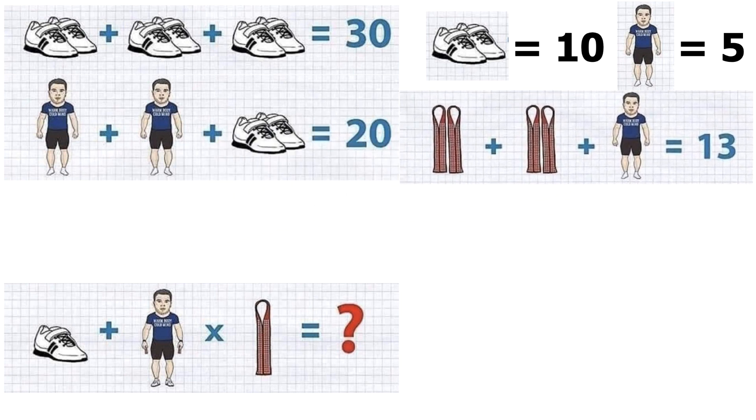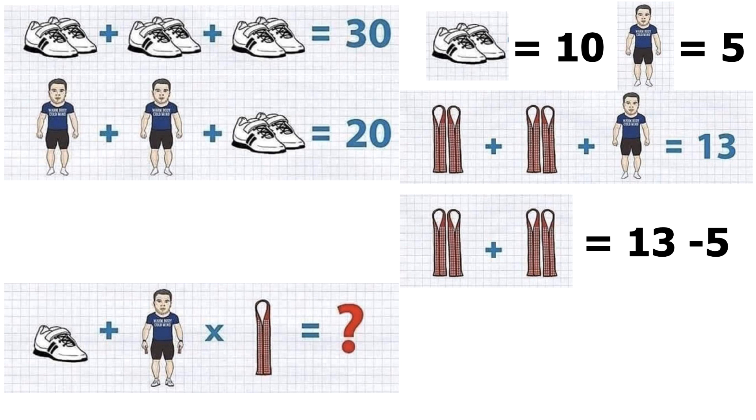Then from the third equation, we can solve the value of one tie is equal to 2. This is because we already know that the value of man is 5 and hence pair of tie must be 4 and value of single tie is 2.